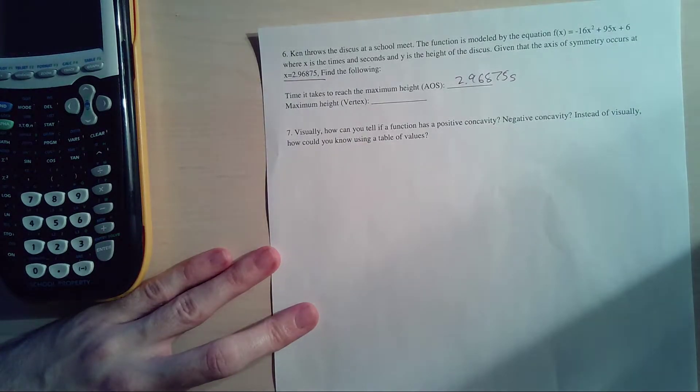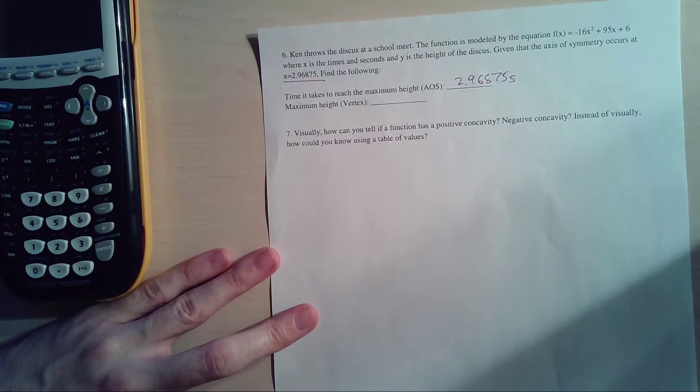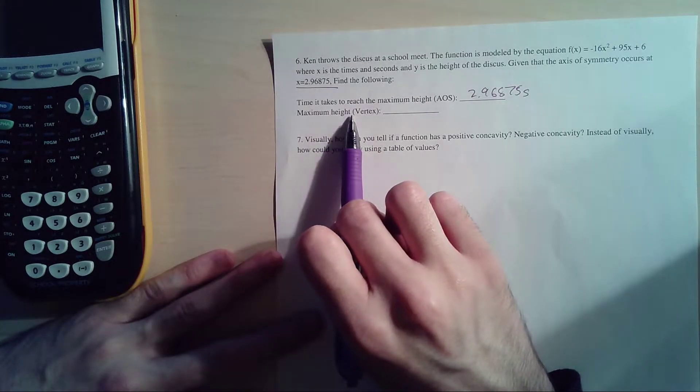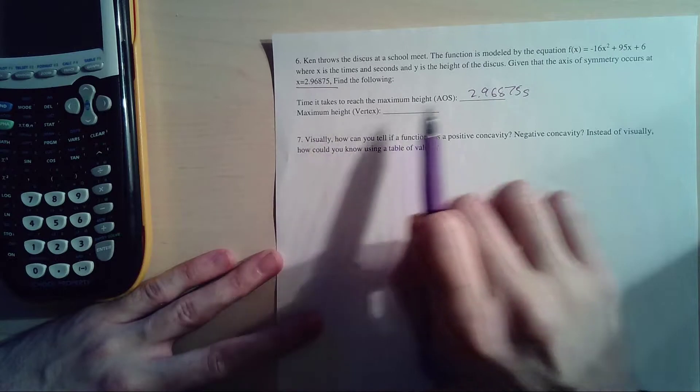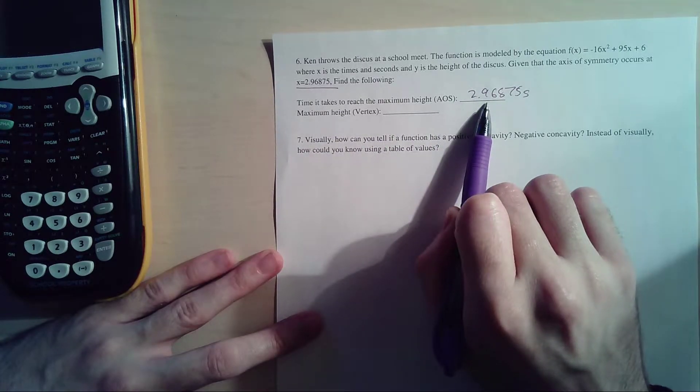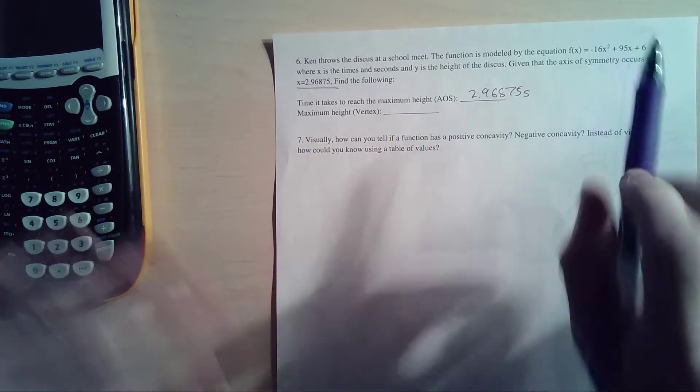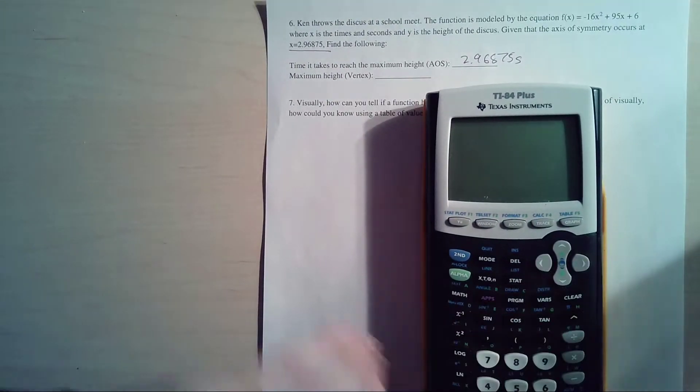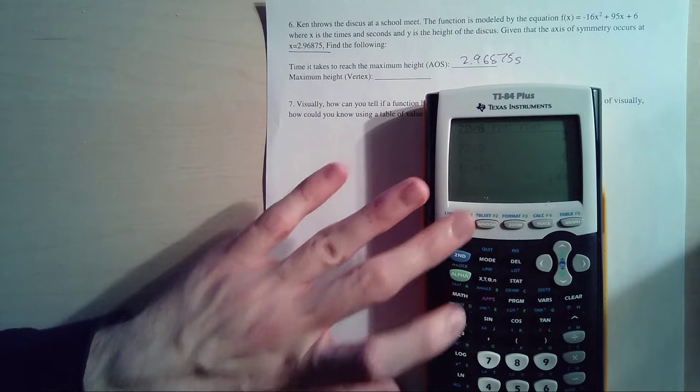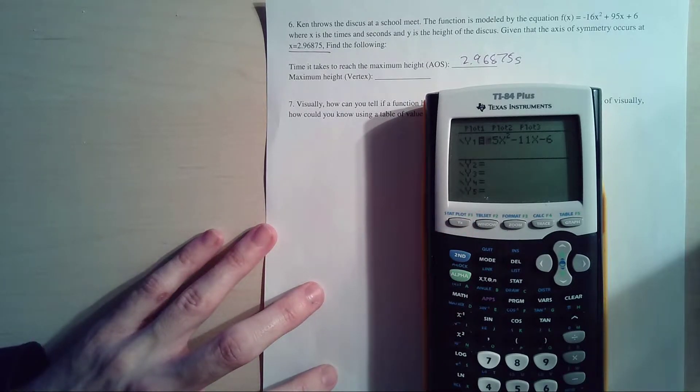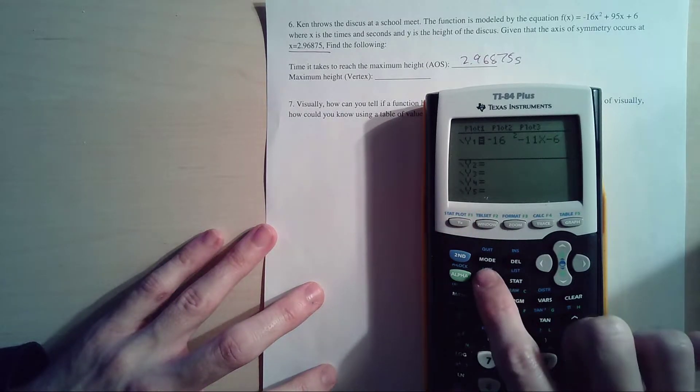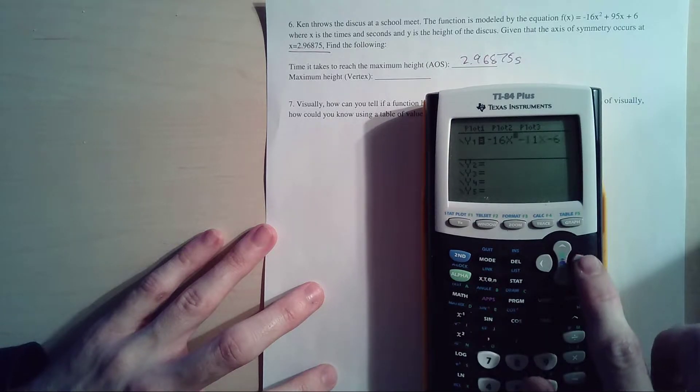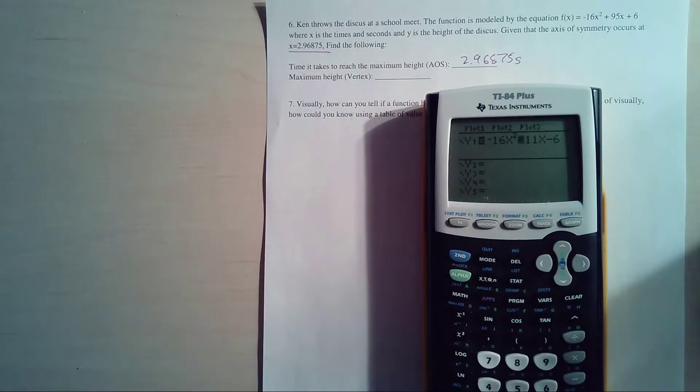And the maximum height - the vertex here, the maximum height is going to be this value at the axis of symmetry. You got to plug that in here. Again, I want to show people how to do this in the calculator to make your life as easy as possible. You go into your Y= screen. In your Y= screen, you do negative 16x² plus 95x plus 6.